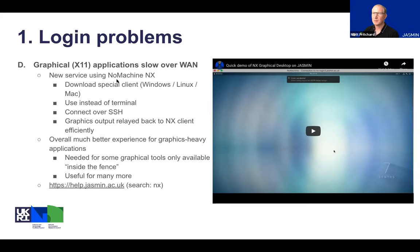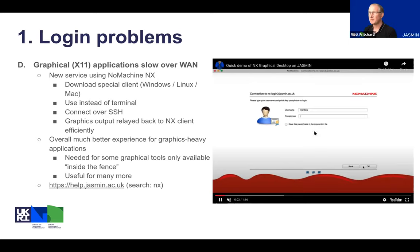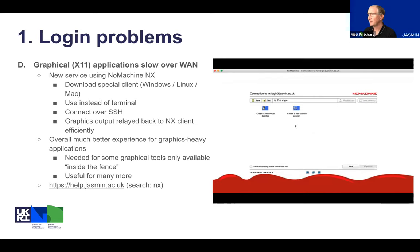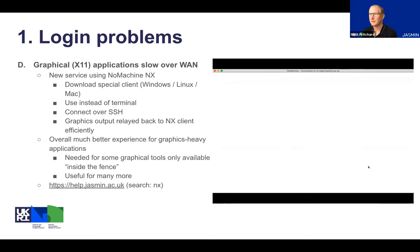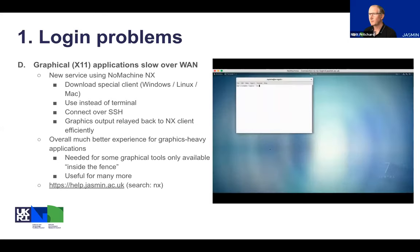We now have a new service using a software system called NoMachine NX. We run a server on the NX login machines, and to use it you download the NX client, available for Windows, Linux, or Mac. You fire up the client, connect using your SSH private key. You can then start a virtual desktop on the NX server, and because it's happening through the NX client, the graphics are relayed back to your local machine really efficiently — the performance difference is quite marked.